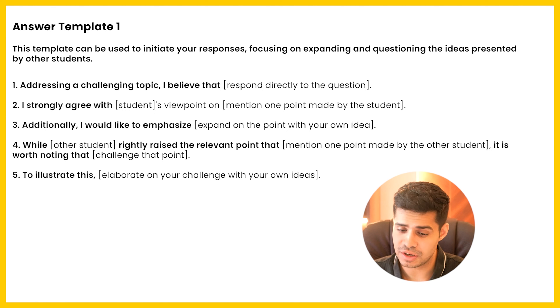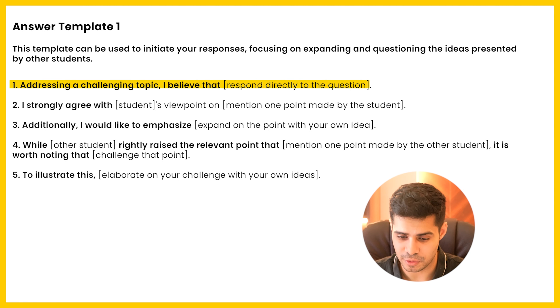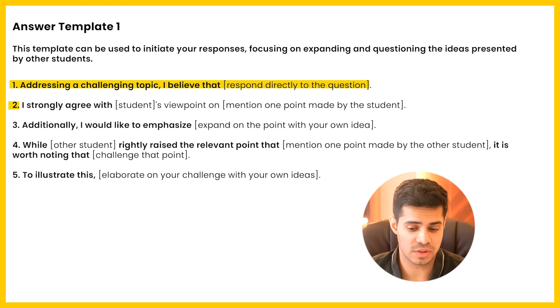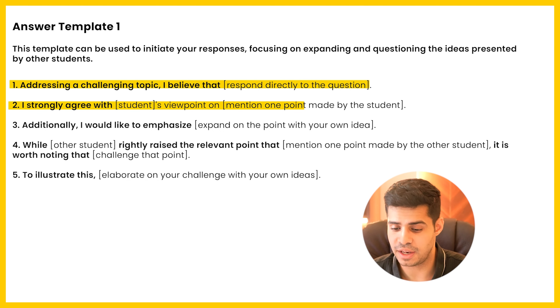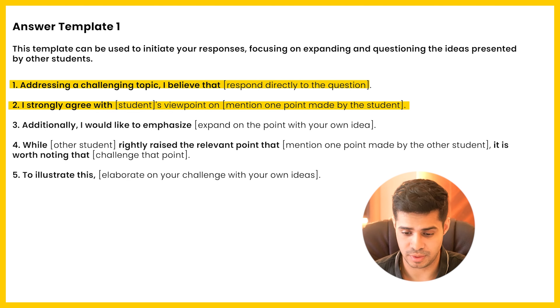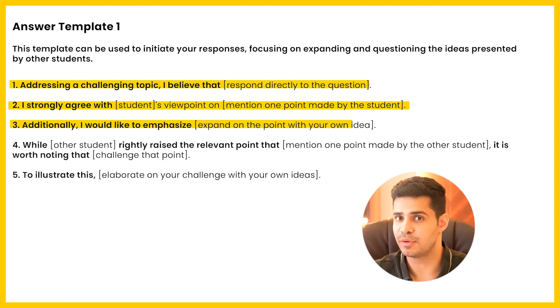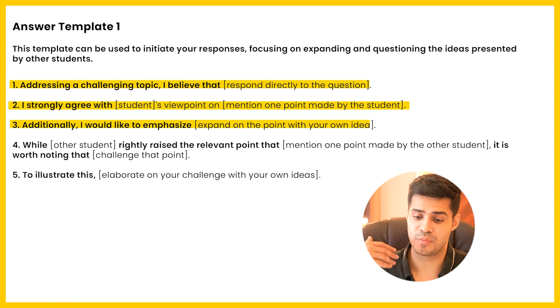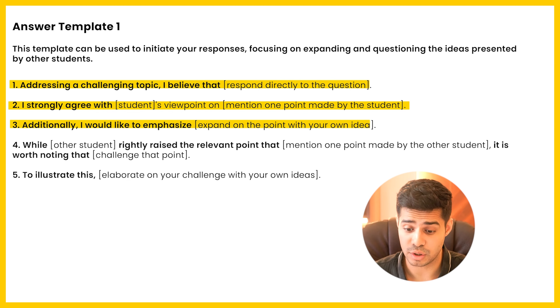Template number two is where you disregard both answers completely and say that both students are not really saying the right thing, and you personally have a different opinion. Template one starts by saying: 'Addressing a challenging topic, I believe that...' and then you respond directly to the question. Then you say: 'I strongly agree with Student A's viewpoint on...' and mention the point that student has made. Then: 'Additionally, I would like to emphasize...' and you expand with your own opinion — an initial point not covered by either student.